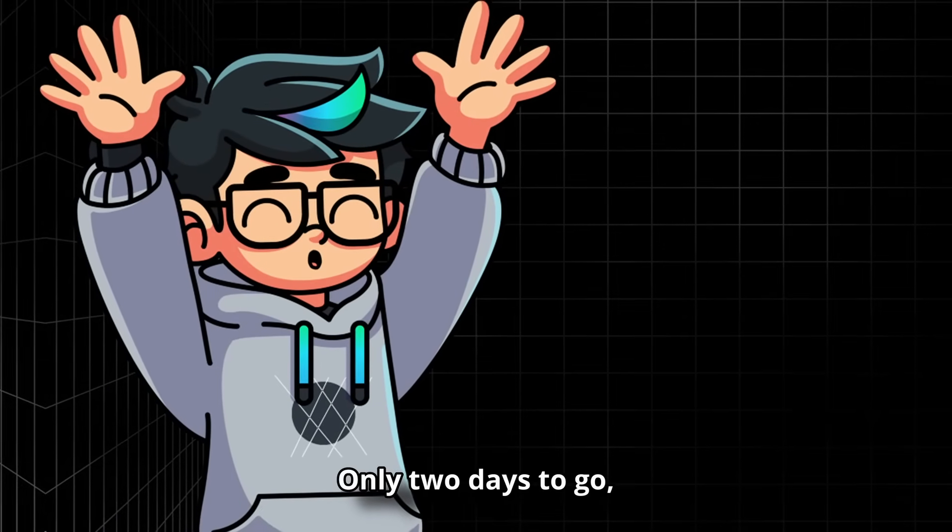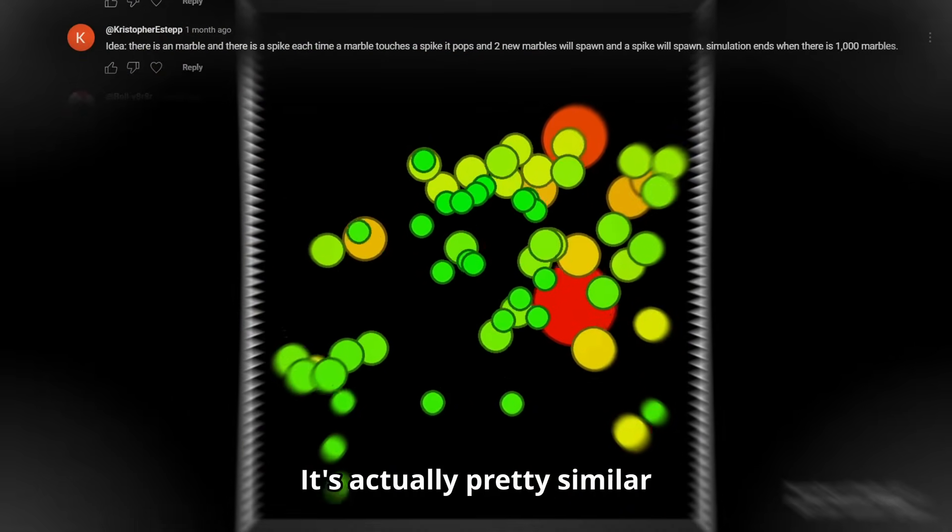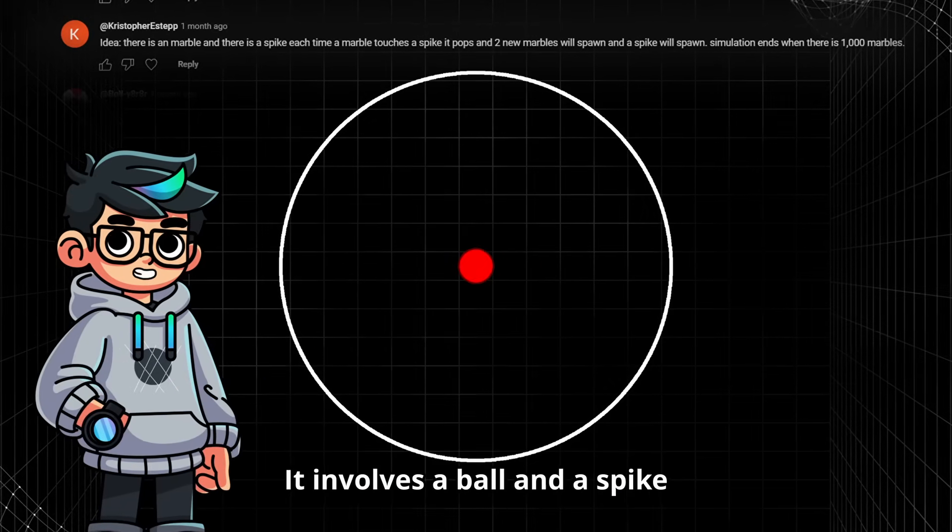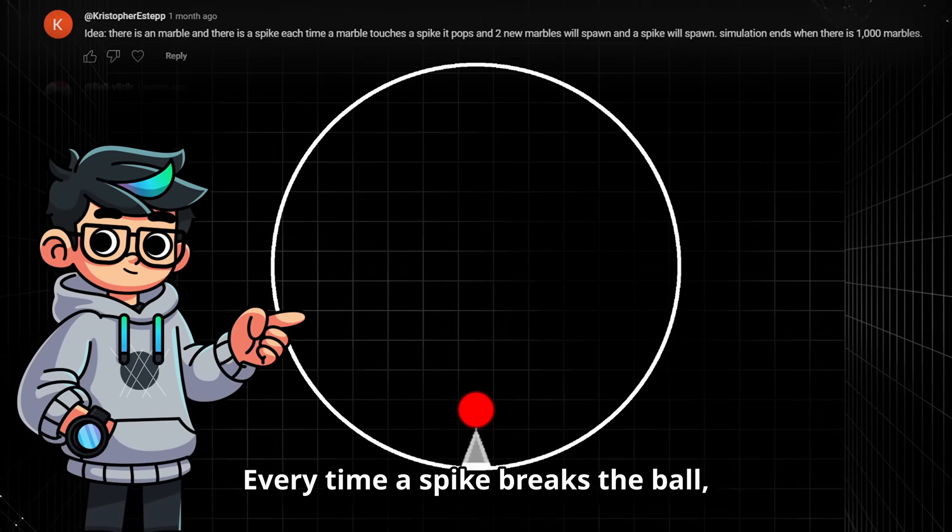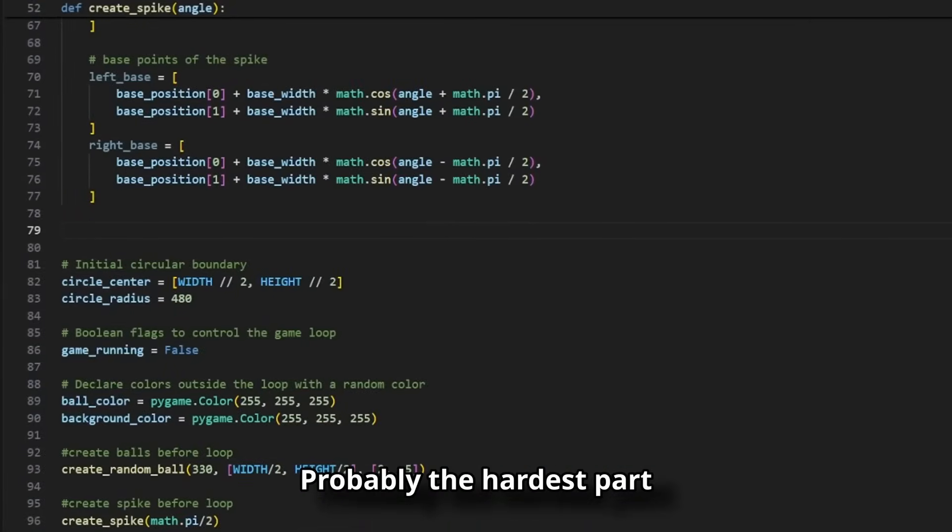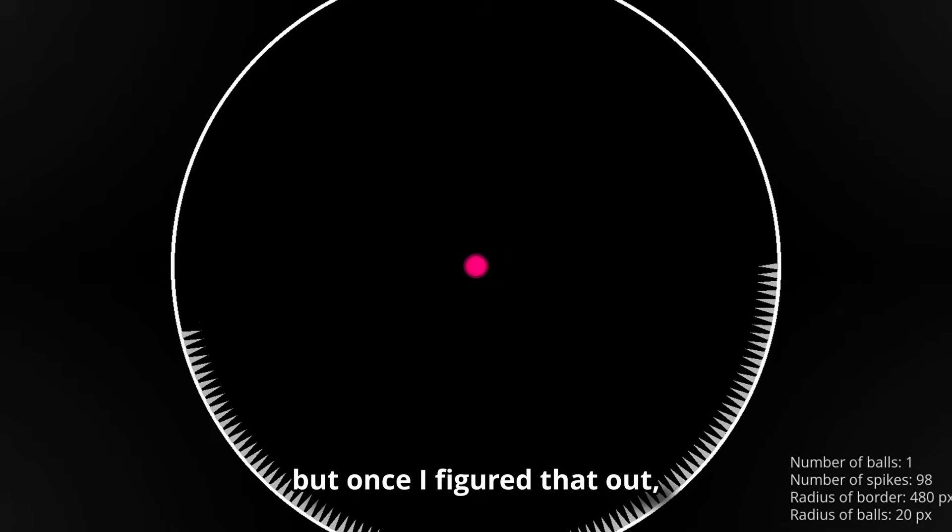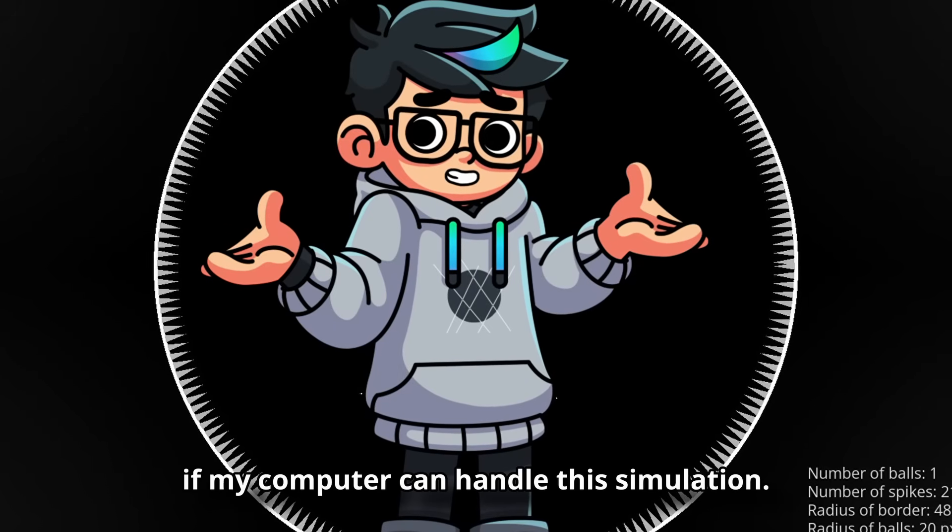Only 2 days to go and today we are coding an idea from Christopher Estep. It's actually pretty similar to the simulation from day 2. It involves a ball and a spike inside a circular boundary. Every time a spike breaks the ball, two new balls spawn and a new spike appears. Probably the hardest part of this simulation to program was the spikes, but once I figured it out, the rest went relatively smoothly. Let's see if my computer can handle this simulation.